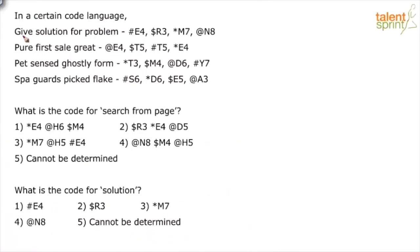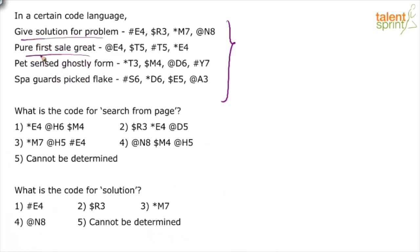In a certain code language, the phrase 'give solution for problem' is coded as #E4, $R3, *M7, @N8. Similarly, 'pure first sale grade' is coded as @E4, $T5, #T5, *E4. Then 'pet sensed ghostly form' has some codes, and 'spa guards picked flake' has some codes. Two questions have been asked. Now, in such questions we normally work on common words, but surprisingly, if you look at these phrases, none of the words are repeated across phrases — all 16 words are unique.